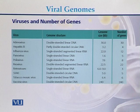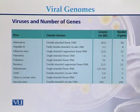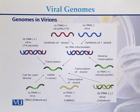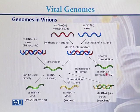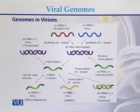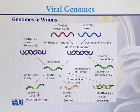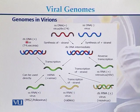This is a comparison between the genome size and number of genes of various viruses. Viral genomes can be in the form of single-stranded DNA (positive strand), single-stranded DNA (negative strand), double-stranded DNA, single-stranded RNA (positive strand), single-stranded RNA (negative strand), as well as double-stranded DNA viruses.